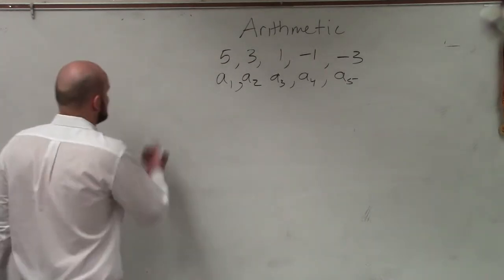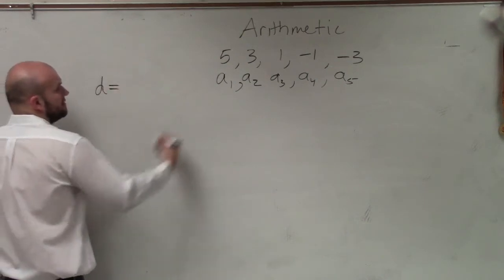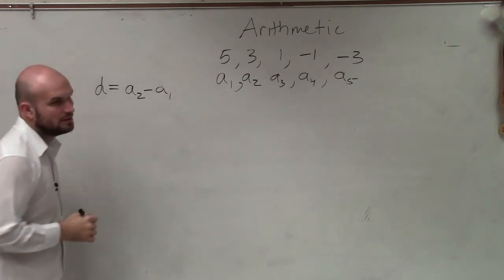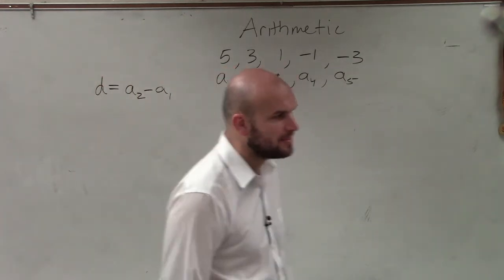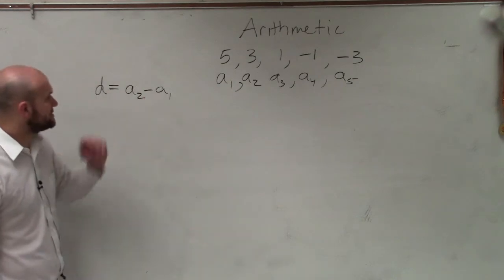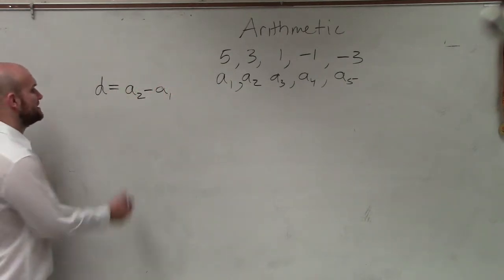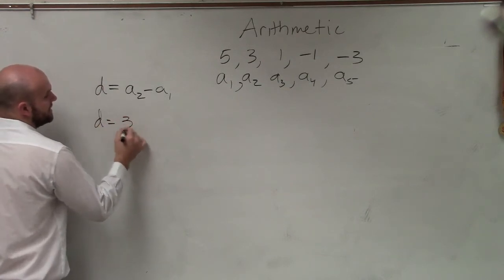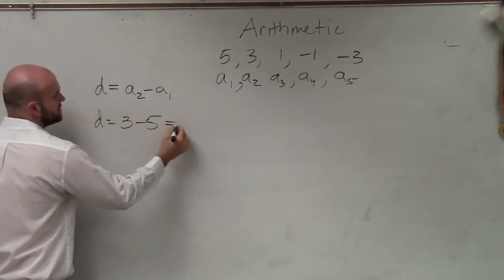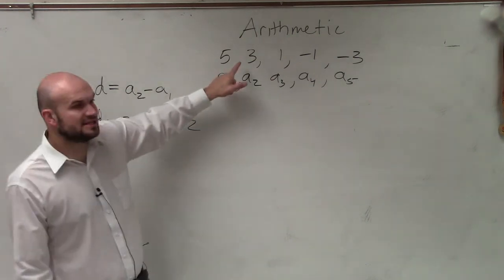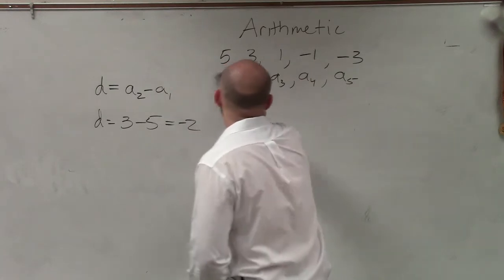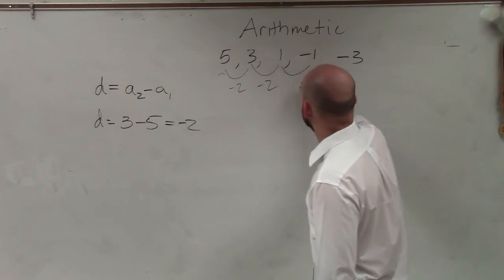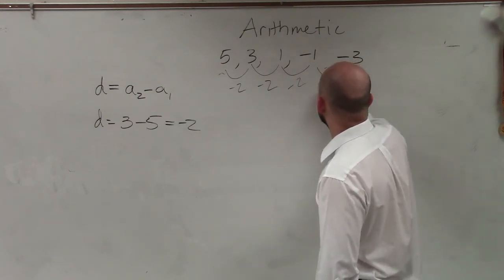To find that difference, it doesn't matter which values you take, but you're going to want to have consecutive values to find the difference. So let's go ahead and determine: is this an arithmetic sequence? We can take the difference: 3 minus 5, which equals negative 2. Is negative 2 the difference between each one of these? Yes — from each term to the next, the difference is negative 2 each time.